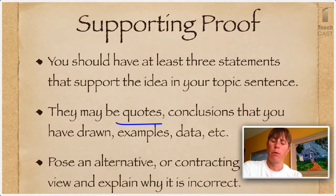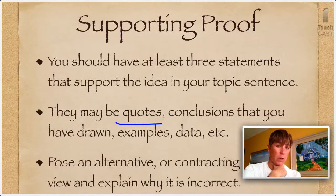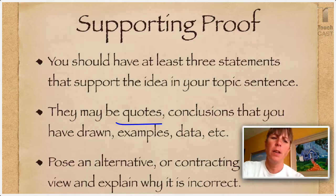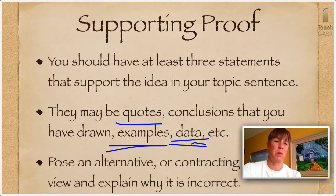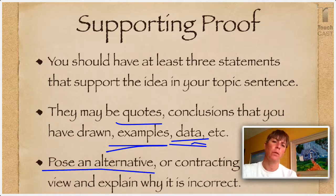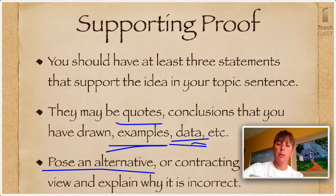Your proof may be quotes from books you're reading. If you're getting them from the internet, make sure they're from reputable sources — you can't believe everything you read out there. It could be conclusions you've drawn, inferences you're making, predictions you're making, and why you're making them. Specific examples are good. Data is always good — if you have numbers to support what you're saying, support it with numbers. Another powerful way to support what you're saying is to pose an alternative point of view, or give a non-example and then explain why it's not an example, why it's not proof for what you're trying to say.